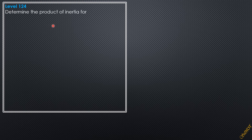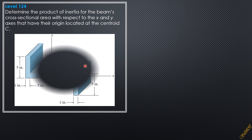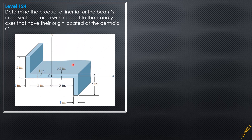Level 124: Determine the product of inertia for the beam's cross-sectional area with respect to the x and y axes that have their origin located at the centroid C. Here is the cross-section of the beam. We divide the sections into this manner — top, bottom, and middle — and take note that the middle rectangle is symmetric with respect to the x-y axis, so its product of inertia with respect to the centroidal x axis is zero. We will only account for these two outer rectangles.